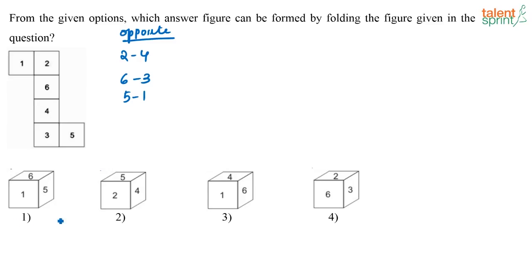Now let us look at the options. 5 and 1 are actually opposite to each other, but in option 1 they are shown as adjacent to each other, which is not possible. See if you write down which are the opposite sides, many times it will help you eliminate the options. So just write down which are the opposite sides and then check the options — it is very easy. Option 1 eliminated.